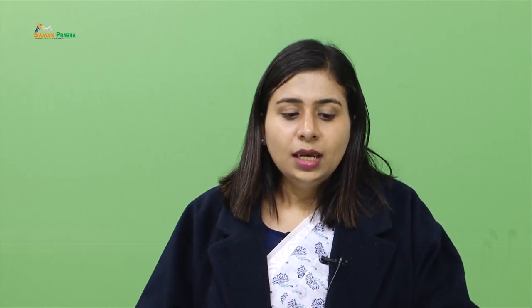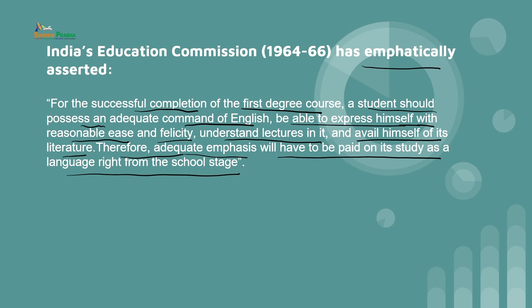English also acted as a bridge between the Britishers and India in the pre-independence period, and in the post-independence period it connected the world with Indians. The University Education Commission respects the nationality and identity of other cultures and languages, and at the same time emphasizes the importance of the English language. India's education system in 1964-66 emphatically asserted that for the successful completion of the first degree course, a student should possess an adequate command of English, be able to express themselves with reasonable ease and felicity, understand lectures in it, and avail of its literature.